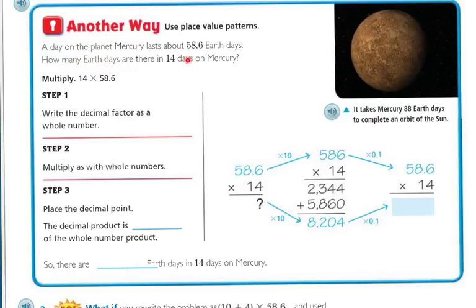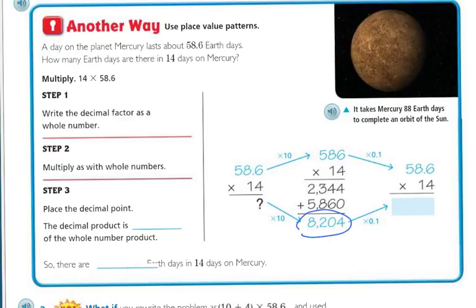A day on Mercury lasts about 58 and 6 tenths Earth days. How many Earth days are there in 14 days on Mercury? We're going to multiply 14 times 58.6. Let's write the decimal factor as a whole number first. Move the decimal over 1 space by multiplying by 10 on both sides — that gives 586 times 14. Then multiply it back with the decimal to get the original form. The product is 8204, and since there's only one decimal place, put the decimal there.